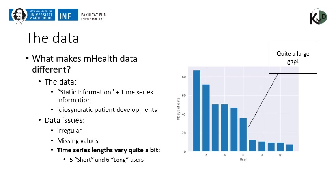There are data issues we must address. One major problem is that data can come in irregularly — this is problematic because many time series algorithms, such as hidden Markov models, assume equidistant observations. Since we're asking humans to fill out questionnaires, they may not answer all questions every time, giving us many missing values. Looking at the chart, there is a clear gap around 30 days, leaving a distinguishable group of five short users and six long users based on the amount of data contributed.